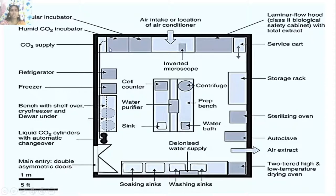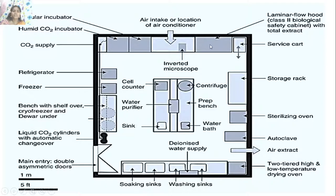This is a blueprint for a cell culture laboratory. Here you can see the main entry with double doors, a soaking sink and washing facility, a two-tiered high-low temperature drying oven for drying and sterilization, air exhaust, autoclave sterilizing oven, and storage rack. There is a place for laminar airflow where culture technique will be carried out, microscopic facility, air intake, air conditioner, regular incubator, carbon dioxide incubator with CO2 supply, refrigerator, freezer, bench shelf, and cryo freezers.